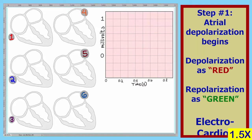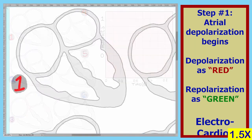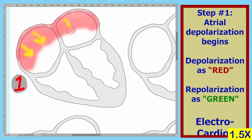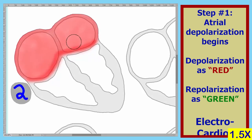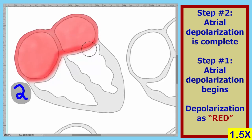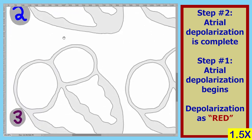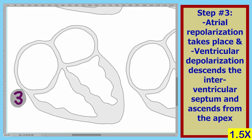In step one, atrial depolarization begins. In step two, atrial depolarization is complete. In step three, atrial repolarization takes place and ventricular depolarization begins.